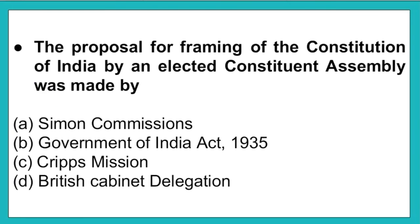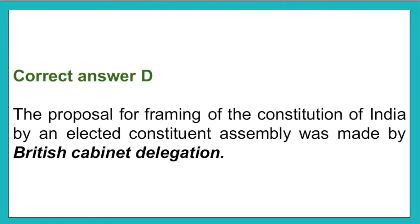The next question: The proposal for framing of the constitution of India by an elected constitution assembly was made by — Option A: Simon Commission. Option B: Government of India Act 1935. Option C: Cripps Mission. Option D: British cabinet delegation. The correct answer is option D, that is the proposal for framing of the constitution of India by an elected constitution assembly was made by the British cabinet delegation.